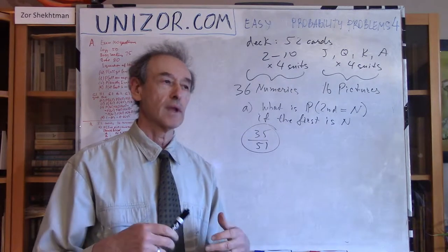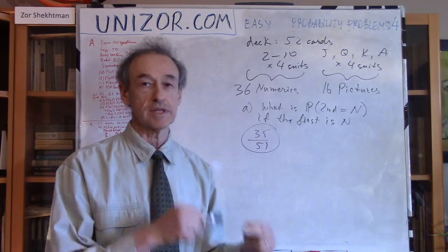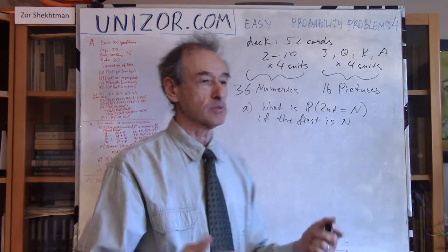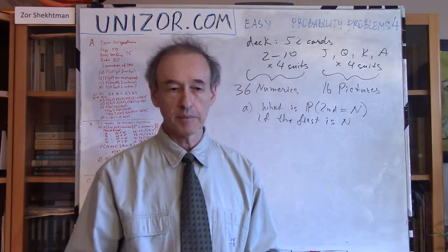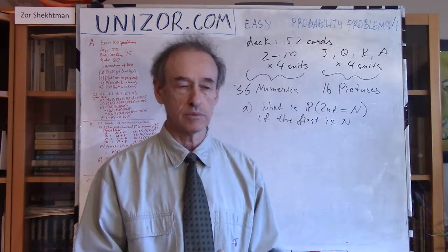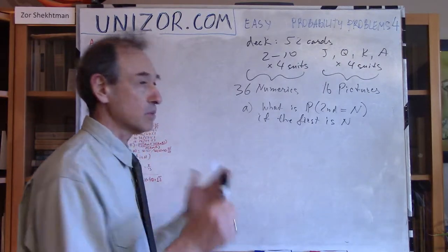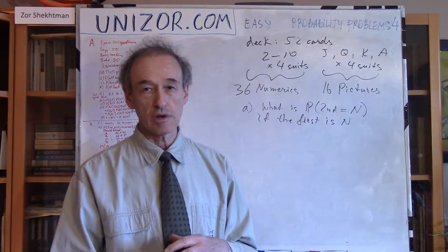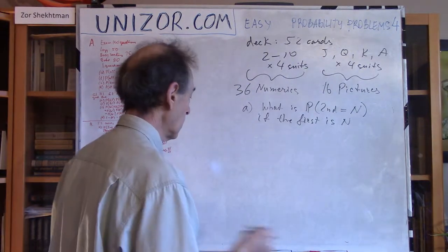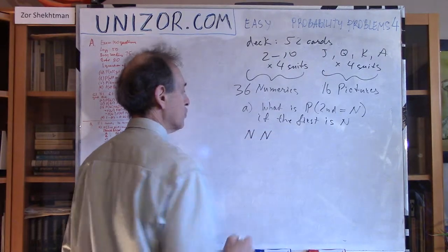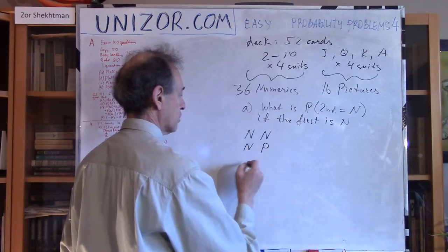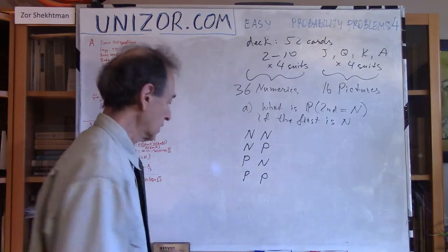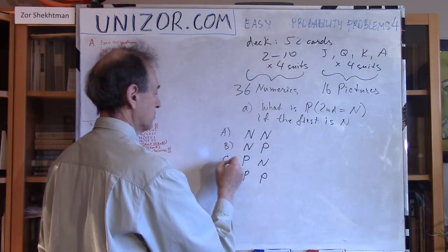I would like to approach this problem in a more theoretical way, because it will be very useful for the next problem. My theoretical approach: let's think about what's my sample space and the probabilities of each elementary event. My sample space is different combinations of numeric and picture among the two picked cards. I have four possibilities: NN (numeric, numeric), NP (numeric, picture), PN (picture, numeric), and PP (picture, picture). Let's call these events A, B, C, and D.